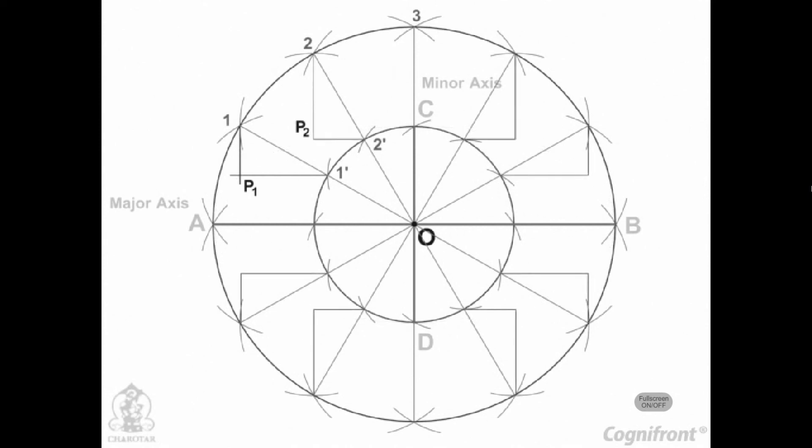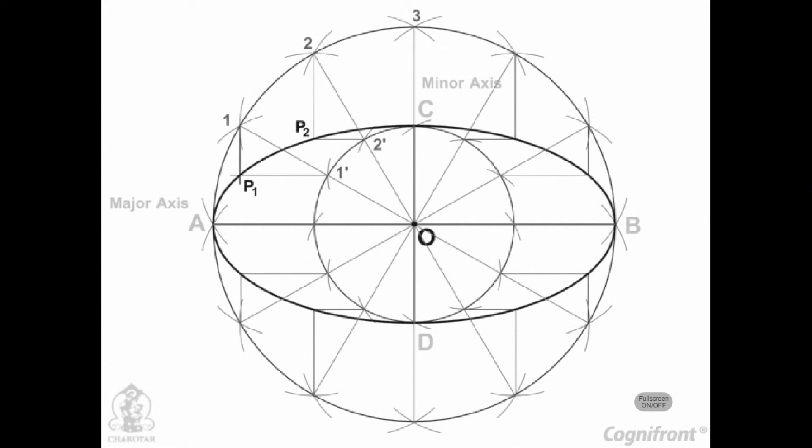Repeat the construction through all the points. Draw the ellipse through A, P1, P2, etc.